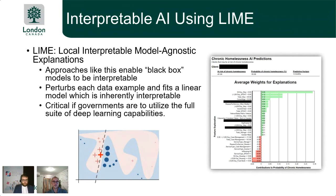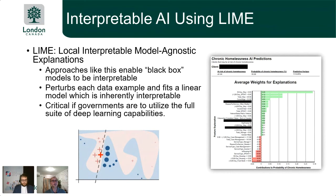The LIME output shows the risk probability of chronic homelessness six months out, along with the main contributory features for a given client. This builds trust that model predictions are reasonable, helps caseworkers understand why predictions are made, and ensures there is no unintended bias. Though we don't have time to cover it, there's significant work around ethical AI development practices, information security, privacy, and consent that allows this sensitive model to be live in production.